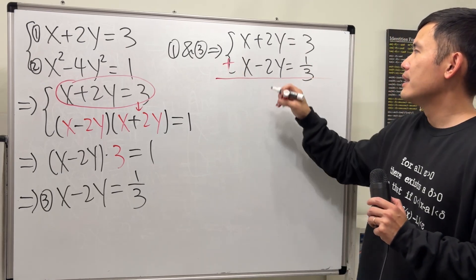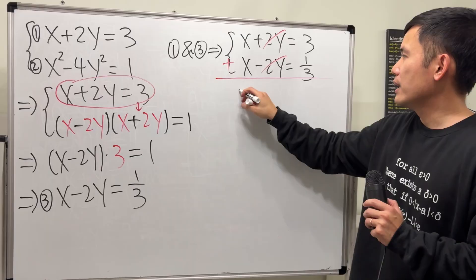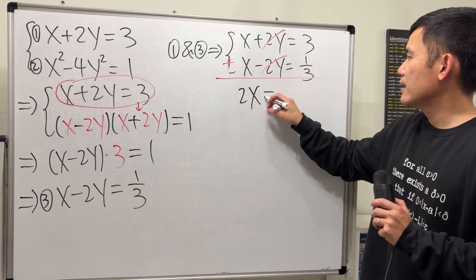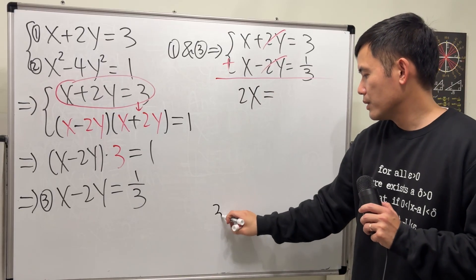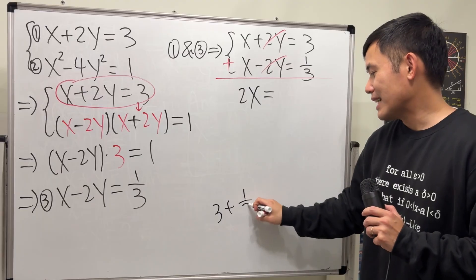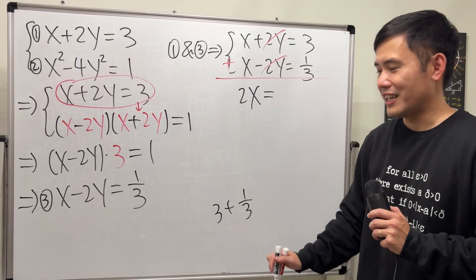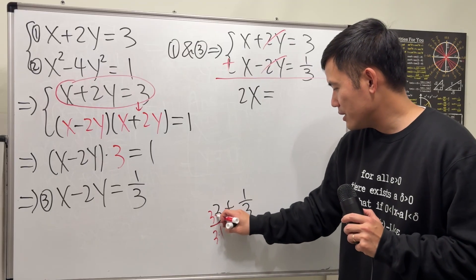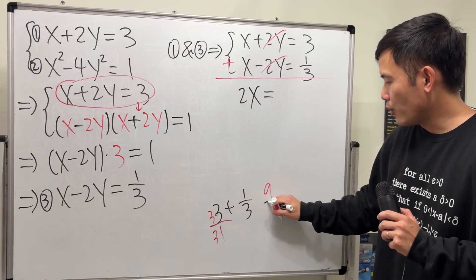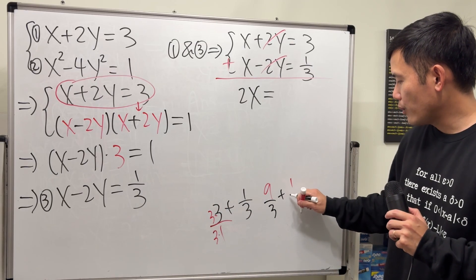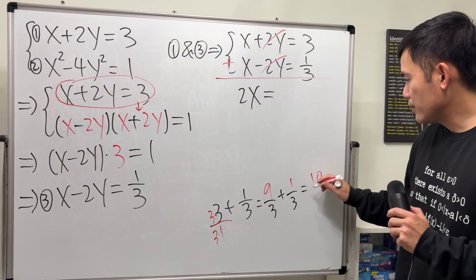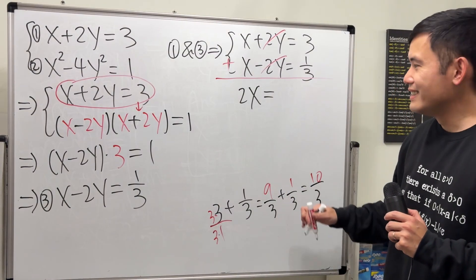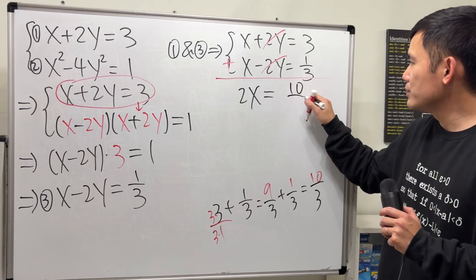So add them up. This and that cancel, we have 2x and 3 plus 1 third. Let's not put mixed numbers. Don't do that. Improper fractions. So multiply 3 and 3, so that will be 9 over 3 plus 1 over 3. So it is 10 over 3.